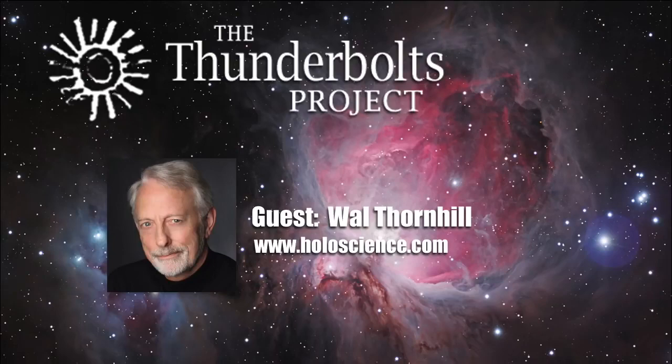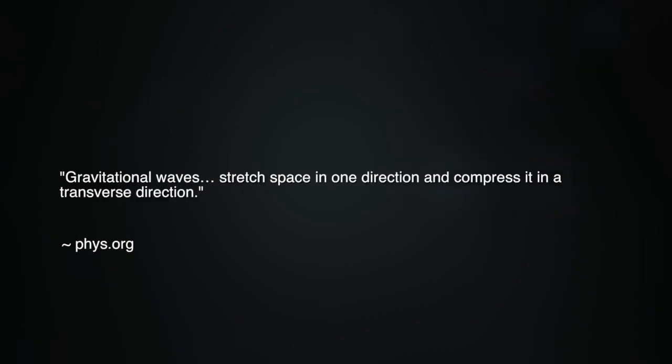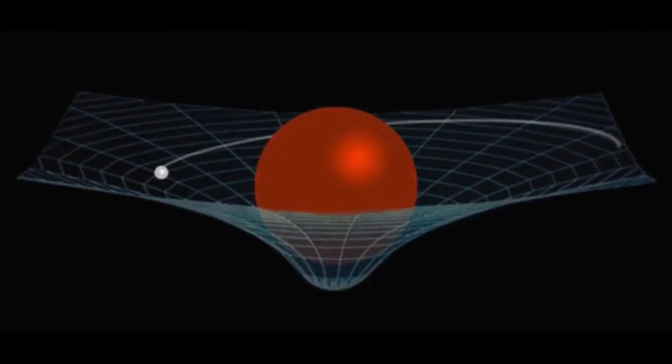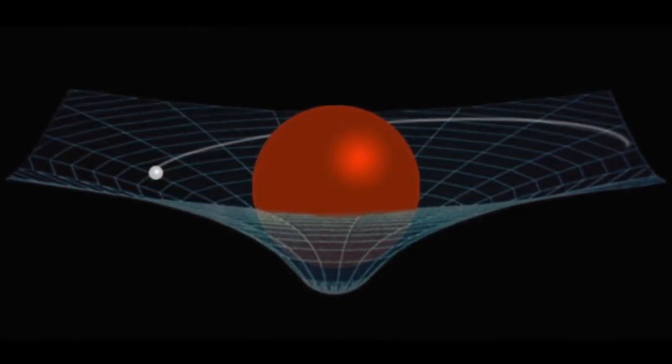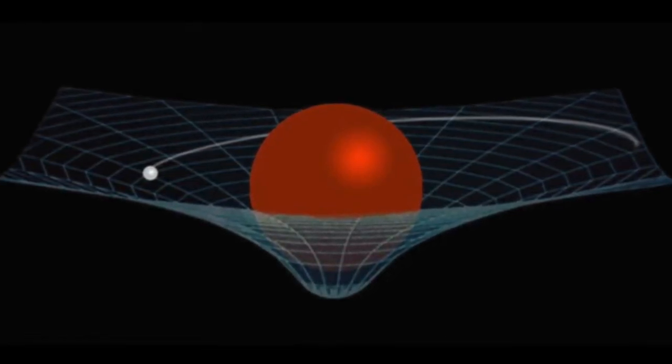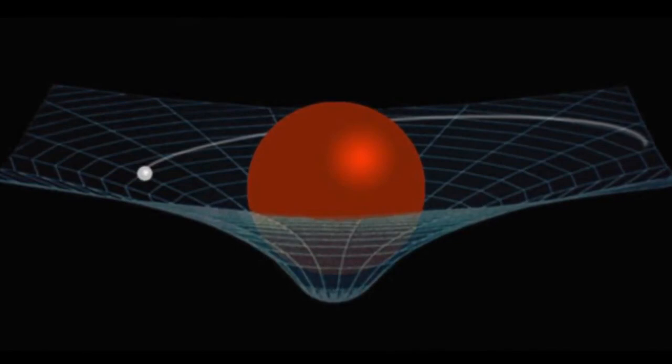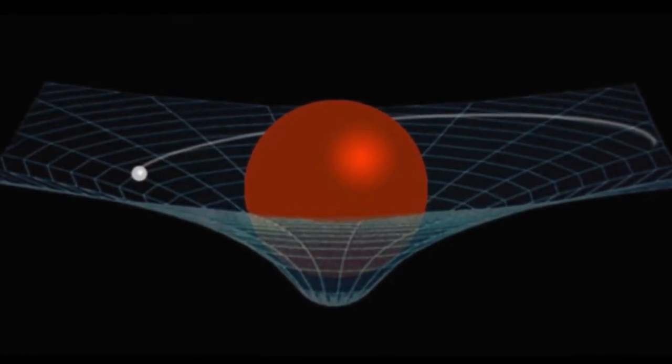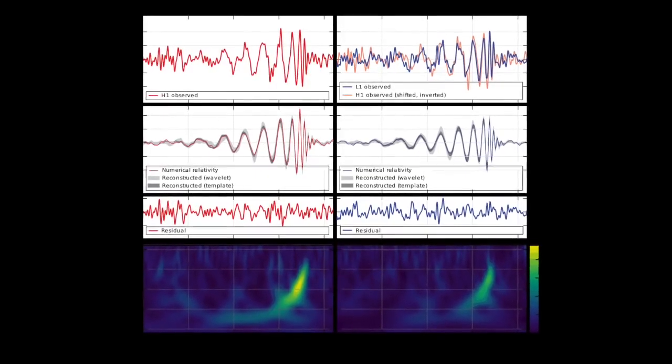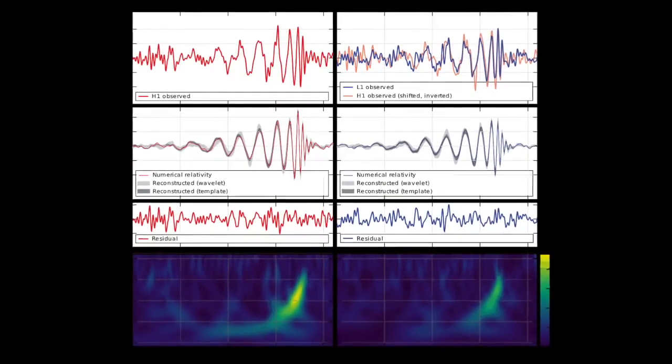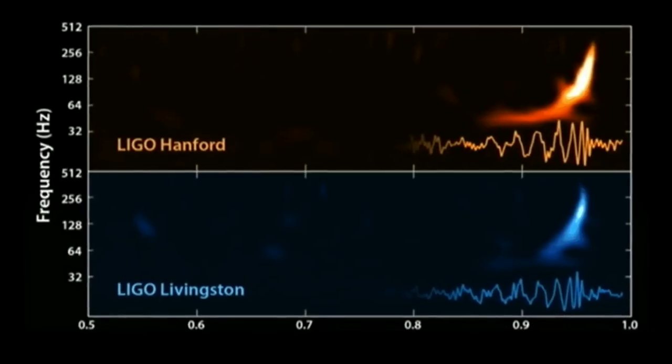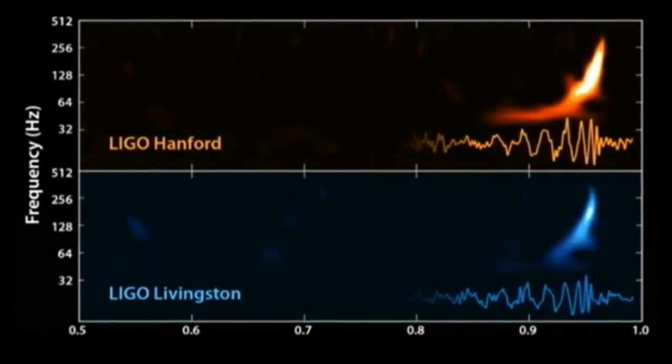Meanwhile, the phys.org report states gravitational waves stretch space in one direction and compress it in a transverse direction. How Einstein's gravity, which does away with force, manages to allegedly stretch and compress a four-dimensional geometric concept of empty space is unexplained. The important thing to note is that the signals did not arrive at the same time in each LIGO detector, so the LIGO signals were not caused by gravity.